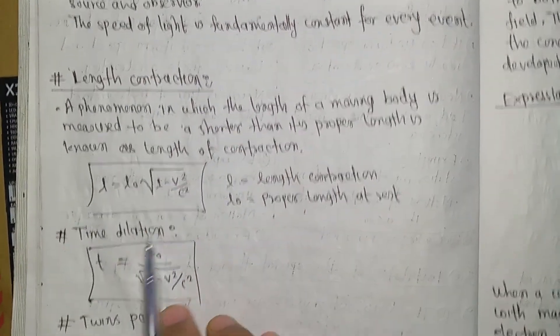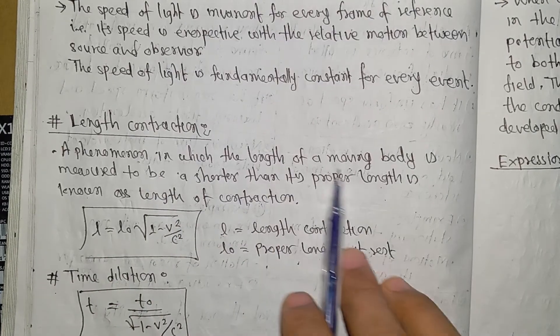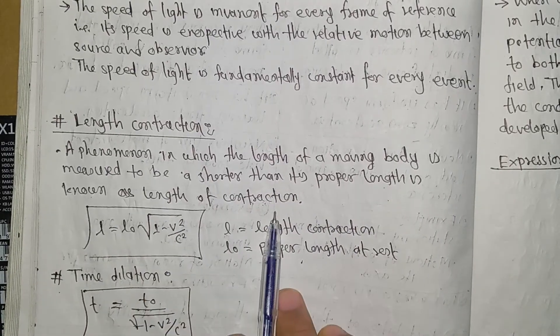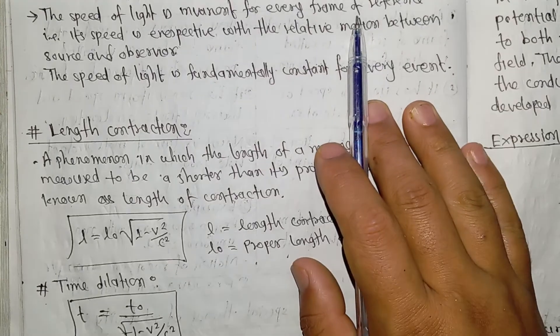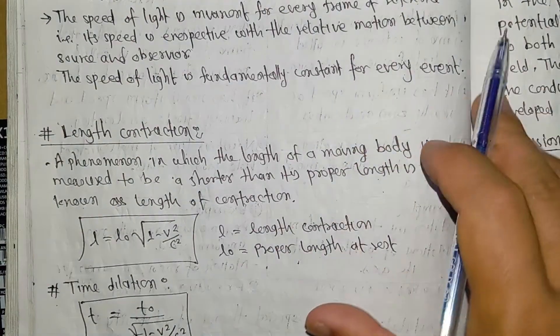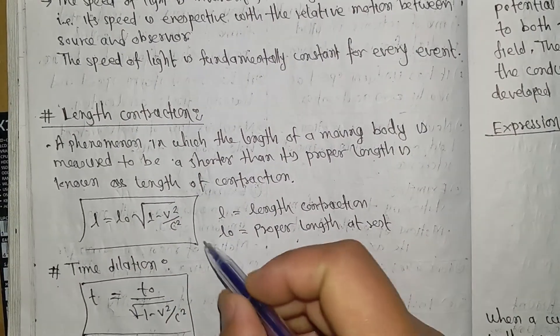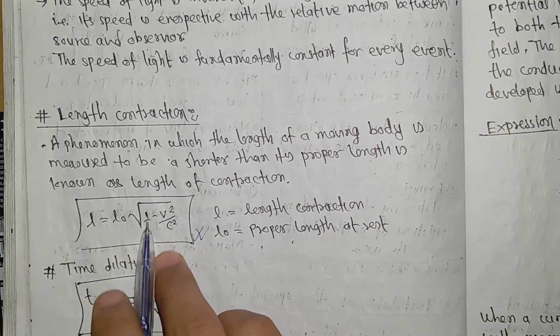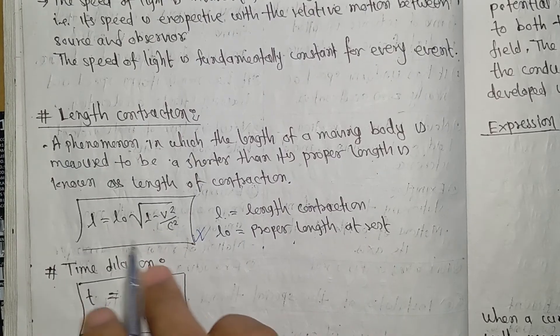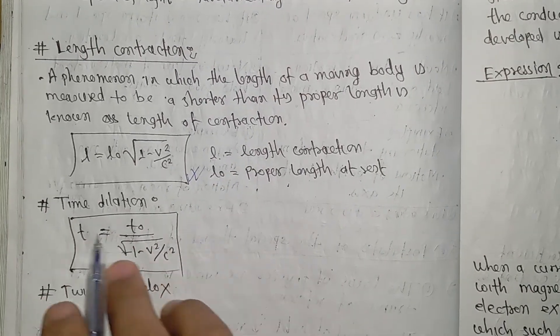What is length contraction? It is a phenomenon in which the length of a moving body is measured to be shorter than its proper length. The formula is L = L₀√(1 - v²/c²), where L₀ is the proper length or original length.